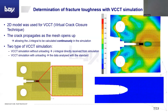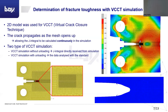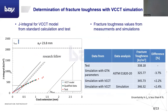Here, two simulation versions were generated. In the first version with the GTN model, the model of the unloading has been constructed and evaluated with the standard. In the second version, the J-integral values have been extracted directly from the simulation. The results can be seen here — the curves are going together. In the case of the determined fracture toughness, the deviation from the measurement is quite small. Therefore, it can be seen that this new technique is very usable for J-integral determination.